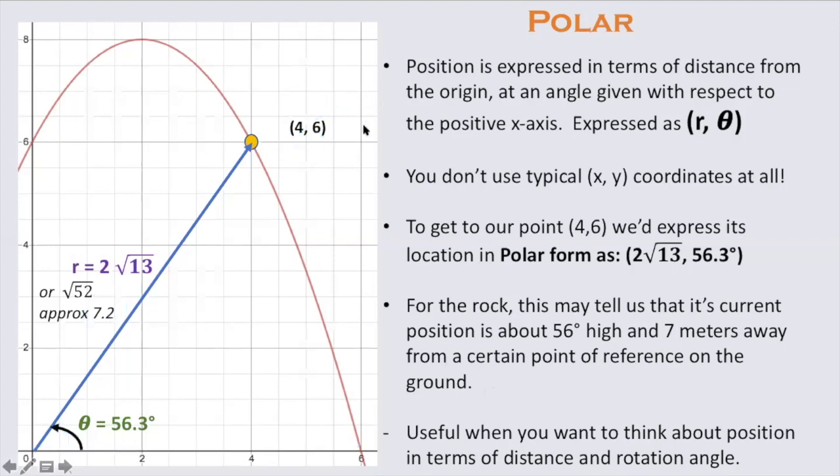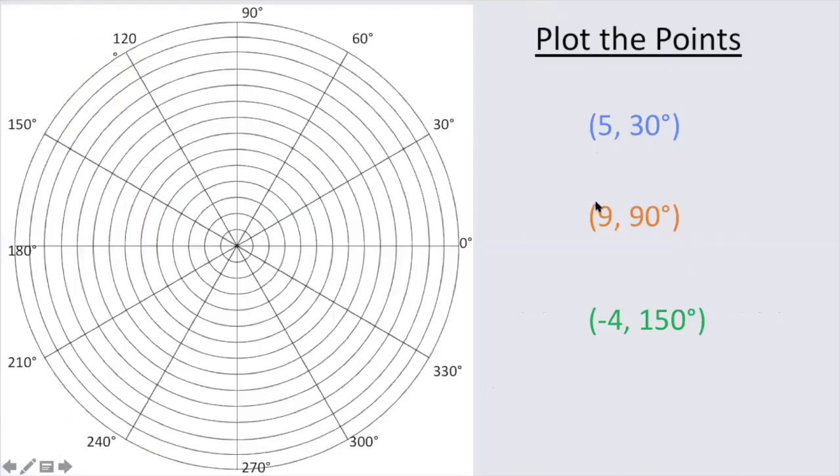So we will continue to take a look here at how to plot polar coordinates. So what you'll see here is some polar graph paper, and we're going to attempt to plot the point 5 comma 30 degrees. So 5 is r, or distance, and 30 degrees is theta, or the angle.